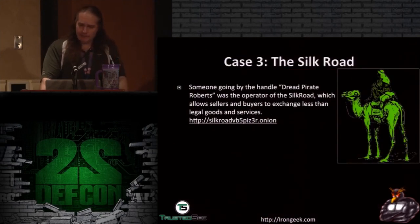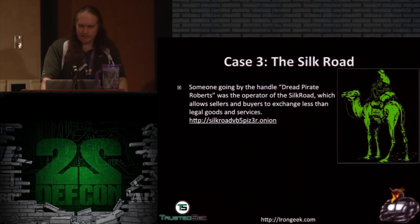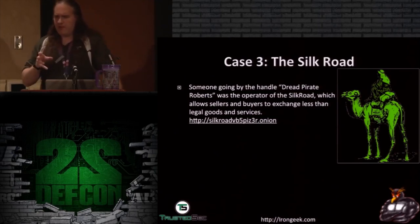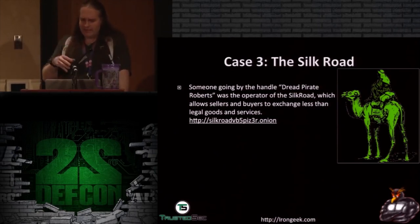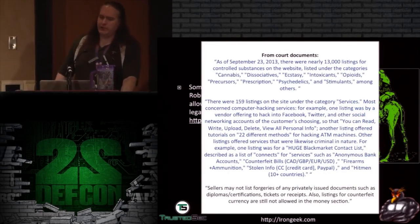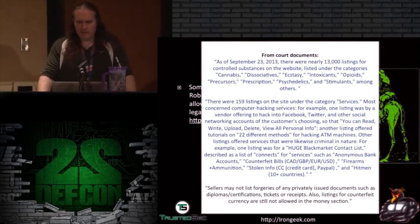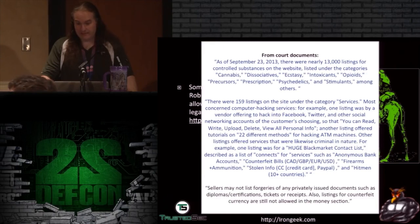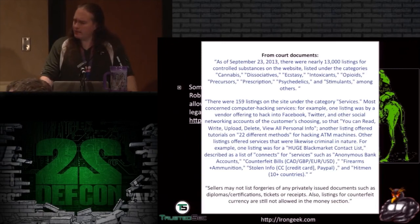That brings us to case three — the Silk Road. Silk Road was run by a guy named Dread Pirate Roberts and allowed buyers and sellers to exchange less-than-legal goods. From the court documents: cannabis, dissociatives, ecstasy, intoxicants, opiates, precursors, prescriptions, psychedelics, stimulants — all sorts of things. They were making about 1.2 billion dollars, so the FBI got a little interested in these guys.